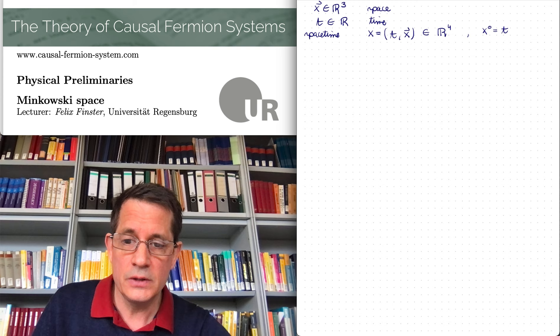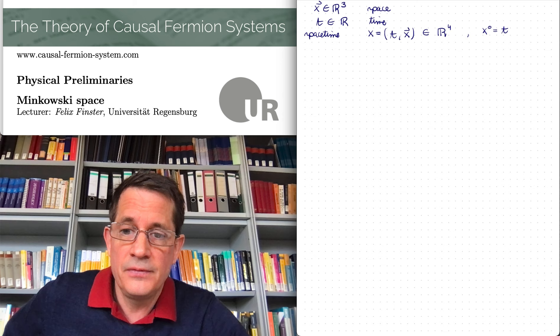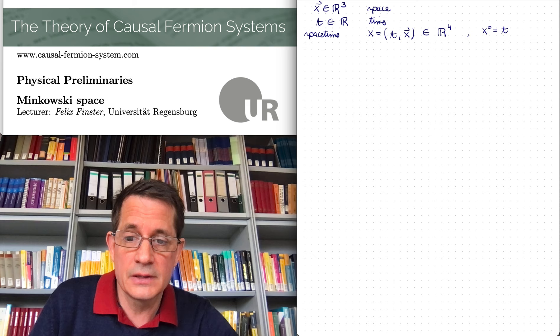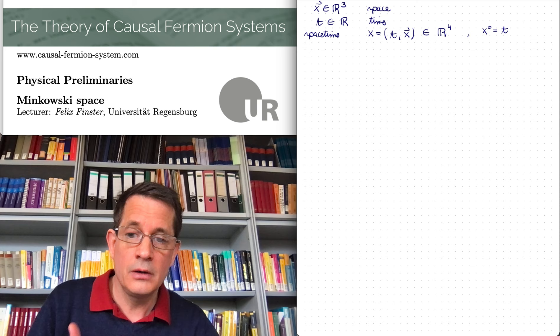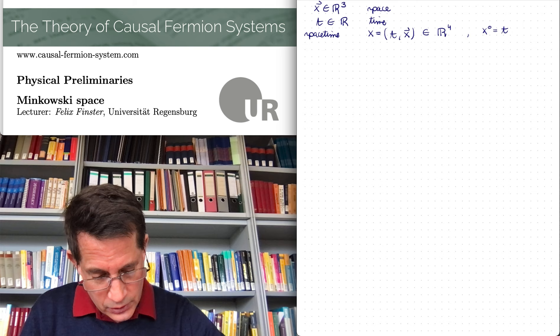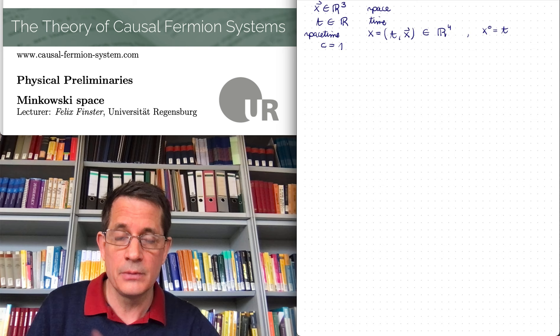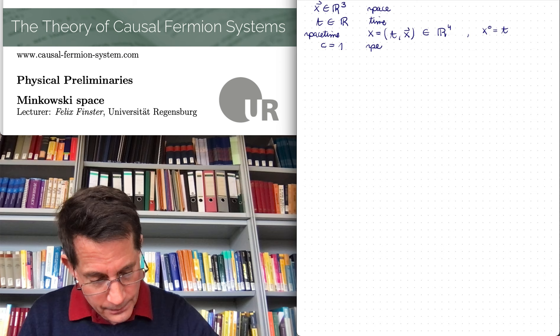It's one of the postulates of special relativity that the speed of light is the maximal speed, so no information can travel faster than with the speed of light. Moreover, the speed of light is universal in the sense that every observer measures the same speed of light, even if the observers move relative to each other. This is implemented mathematically by an inner product on spacetime points, namely the Minkowski inner product. I always set the speed of light equal to one - one chooses the unit for time in such a way that the speed of light is equal to one.